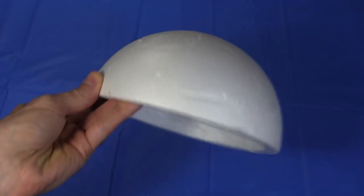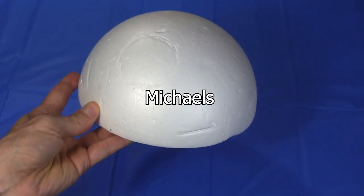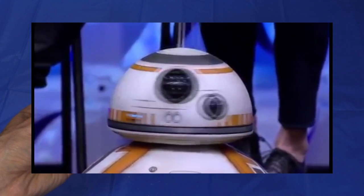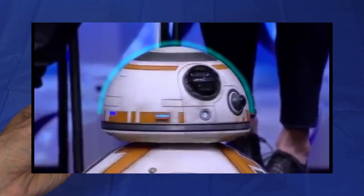The head is still based on this 8 inch styrofoam hemisphere from Michaels, an art store. Notice that the BB-8's head is a half sphere only to around here, where it has a base that's straight for a bit, and then has this upside down cone section.